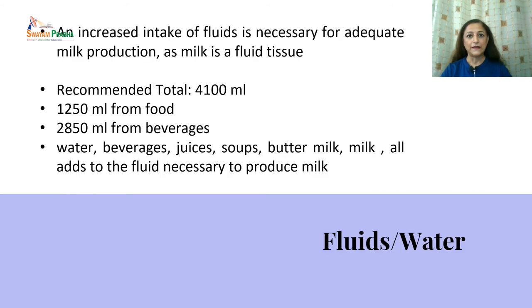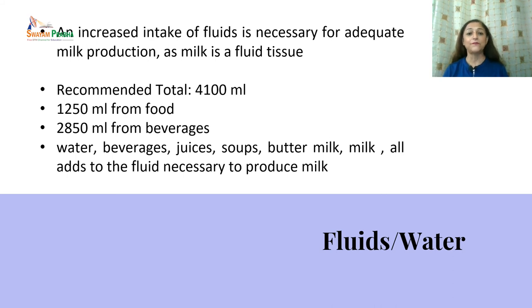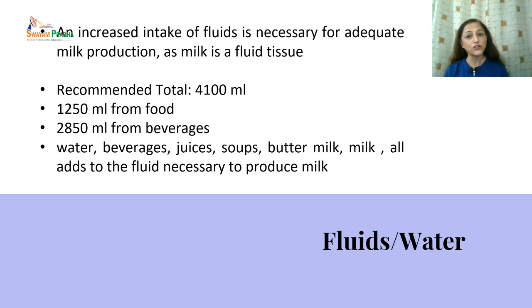An increased amount of fluids is necessary for adequate milk production, as milk is a fluid tissue. It is recommended that the lactating woman consume a total of 4100 milliliters of fluids daily. Of this, around 1250 ml should come from food, and the rest from beverages such as water, juices, soups, buttermilk, and milk — all of which contribute to the fluid necessary to produce milk.